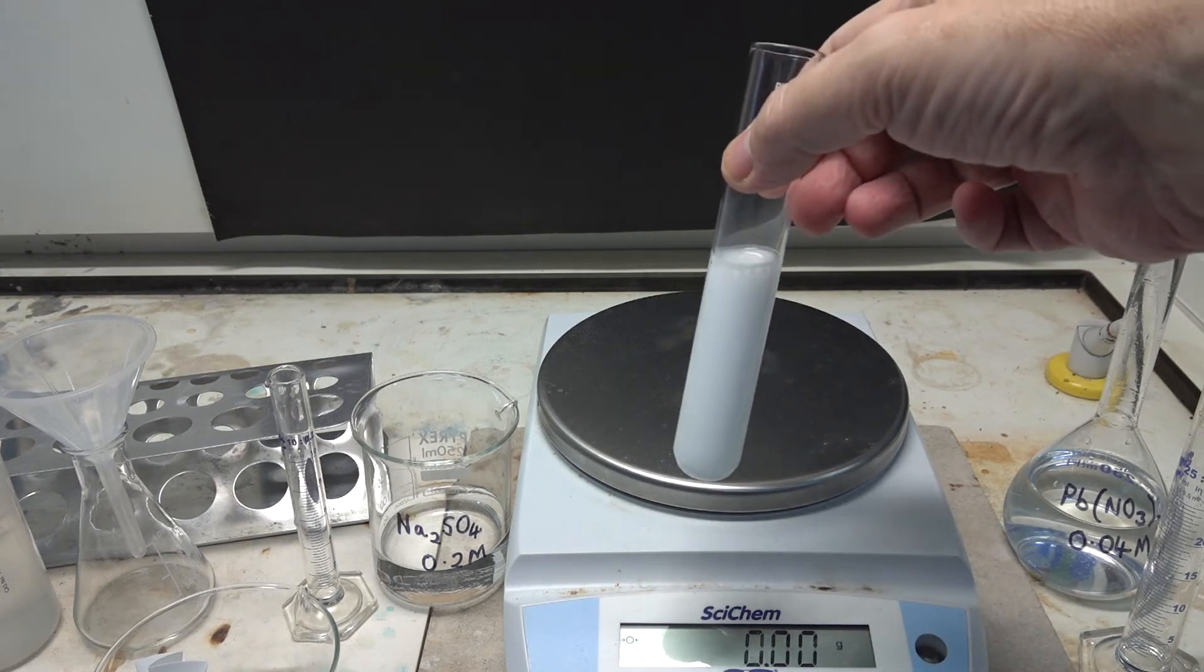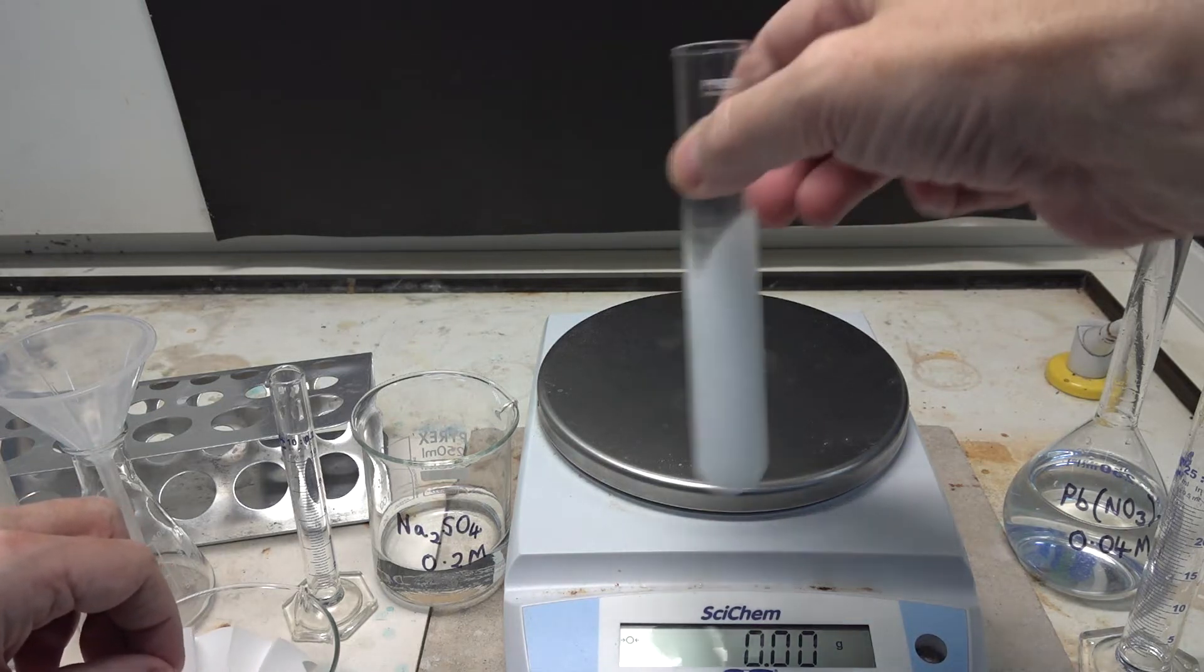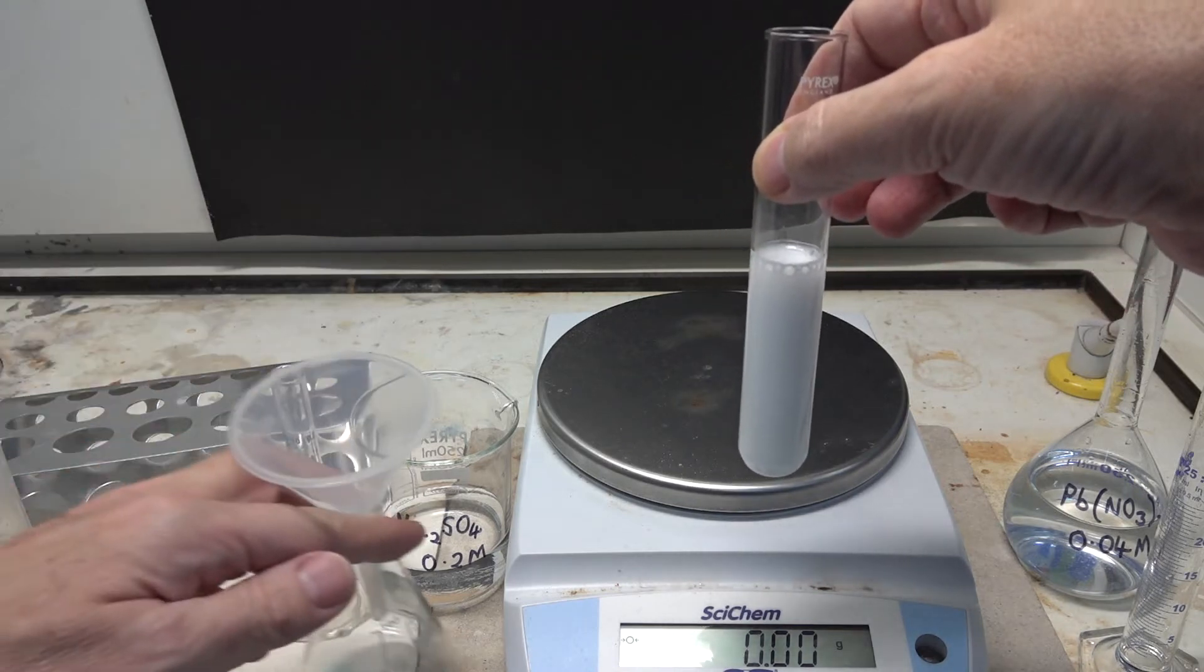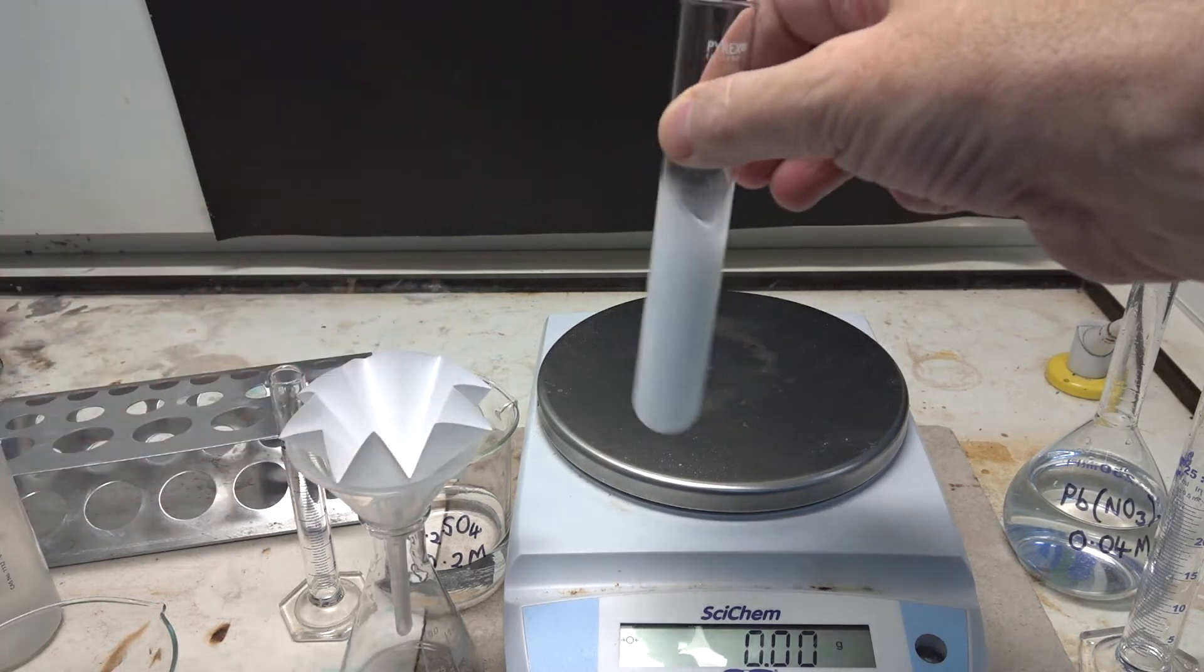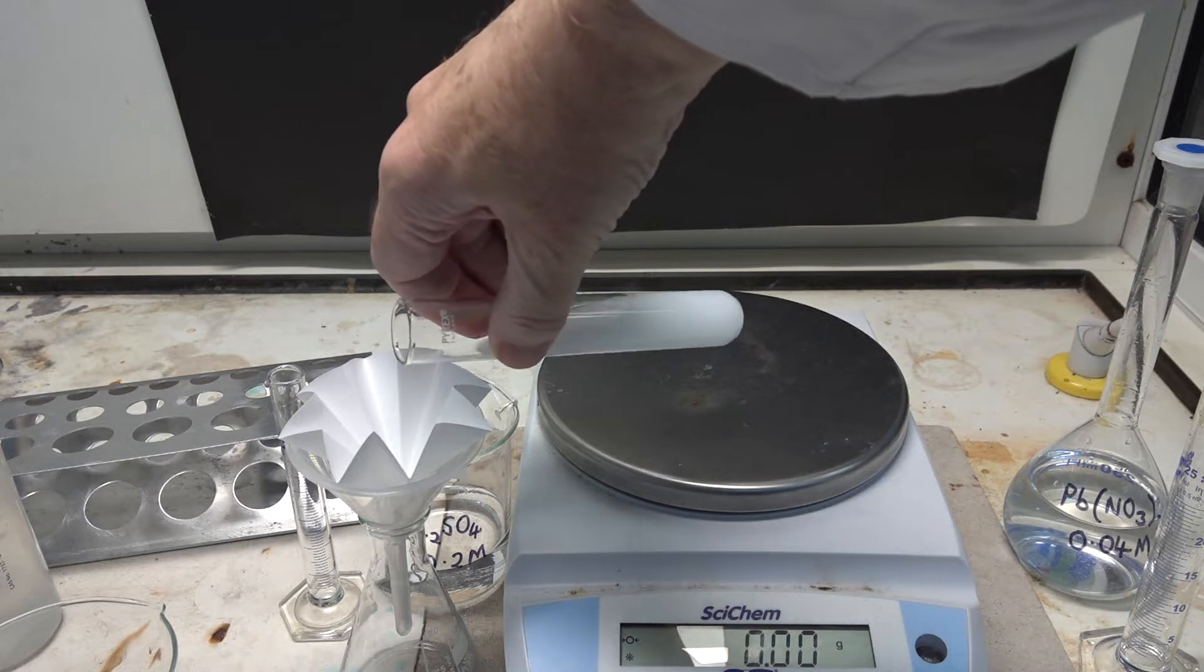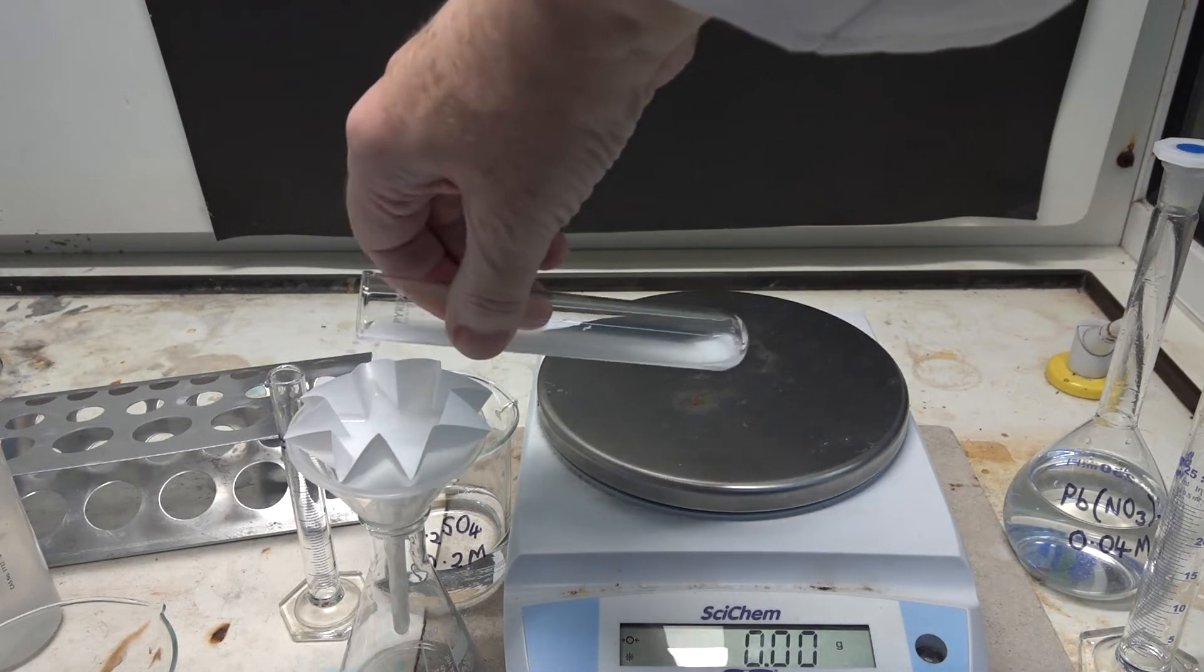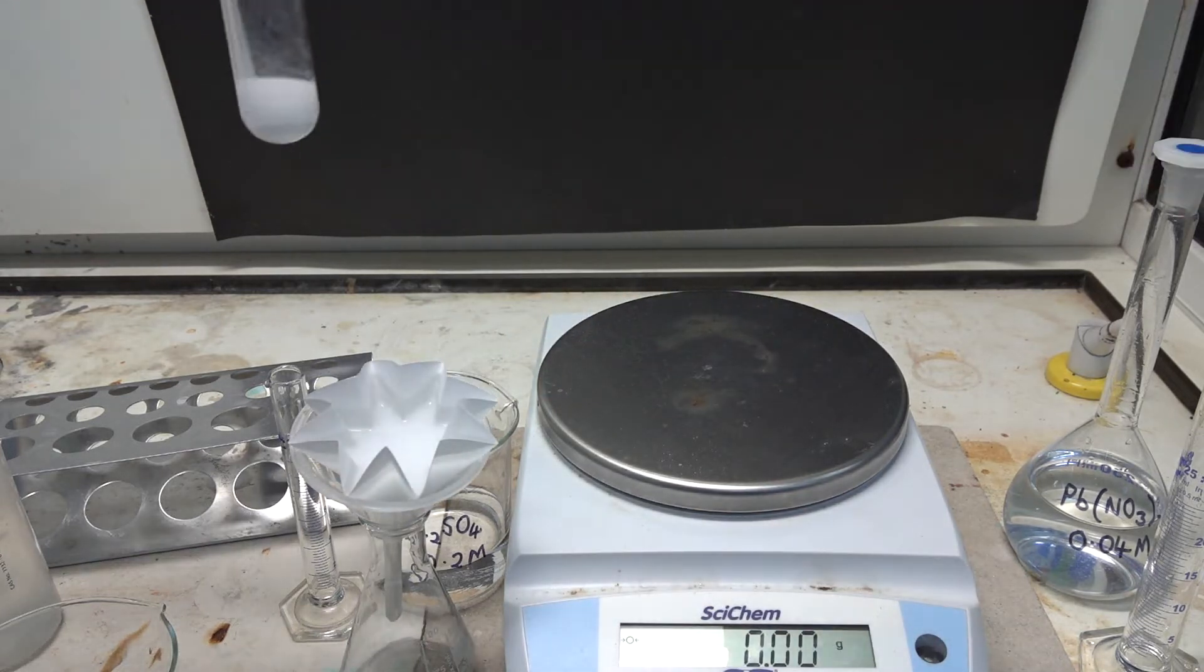And the next step in the experiment is to filter out the white precipitate. So we've got our funnel here and our conical flask. Into that we place the fluted filter paper, and we should be able to pour some of the reaction mixture into that. There it goes, it's the first batch.